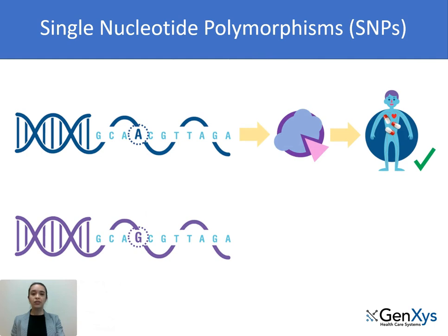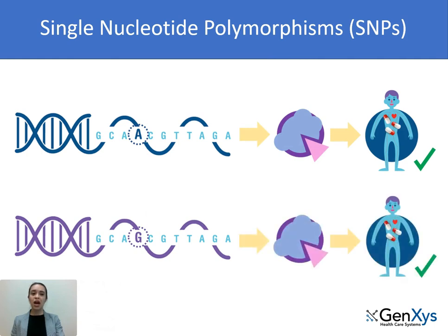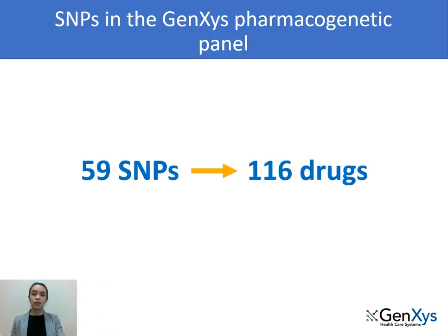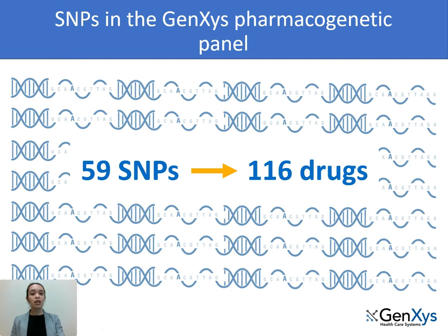In some cases, these variations will not have an effect on the protein encoded by a gene. In other situations, the variation may cause a small effect, but not large enough to change the response to a drug. Because of this, the Genetsis Pharmacogenetic Panel only focuses on SNPs that have a demonstrated clinical effect.